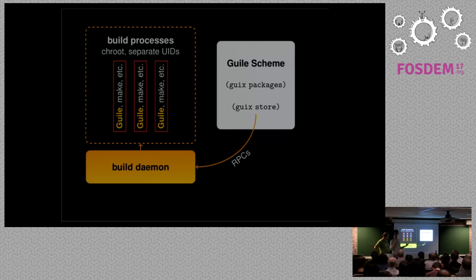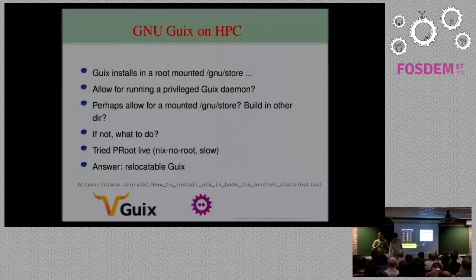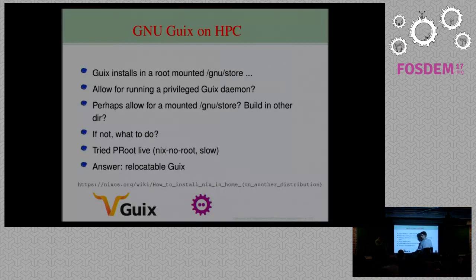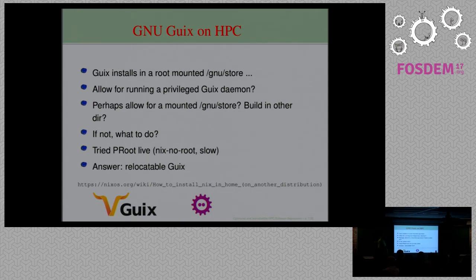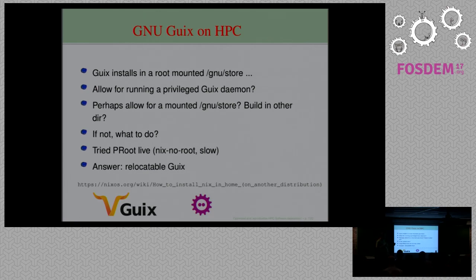Taking off where Ludo left off - Guix basically installs in a path called /gnu/store, and this is done for reasons of reproducibility. We want everything to be exactly the same in every environment. But on a typical HPC setup - I'm using a supercomputer at Oak Ridge - we're not allowed to run a daemon with root privileges, so the build system running on Oak Ridge is out. One solution, also described by Ricardo, is to mount a GNU store through NFS and have a build daemon sitting on a separate node somewhere, which is a possibility if you have a slightly enlightened system administrator.